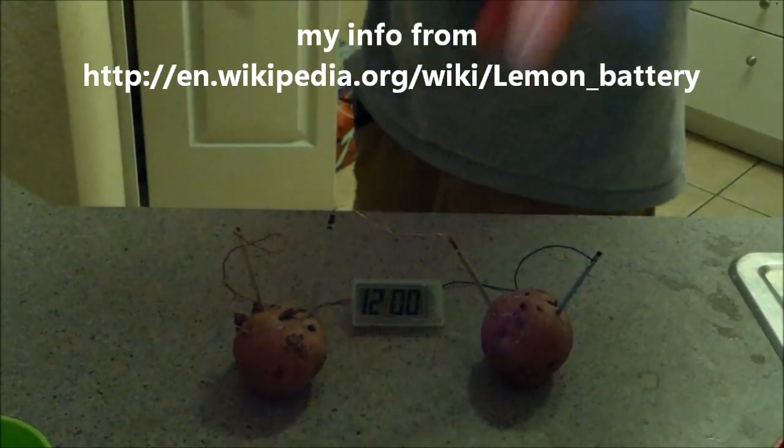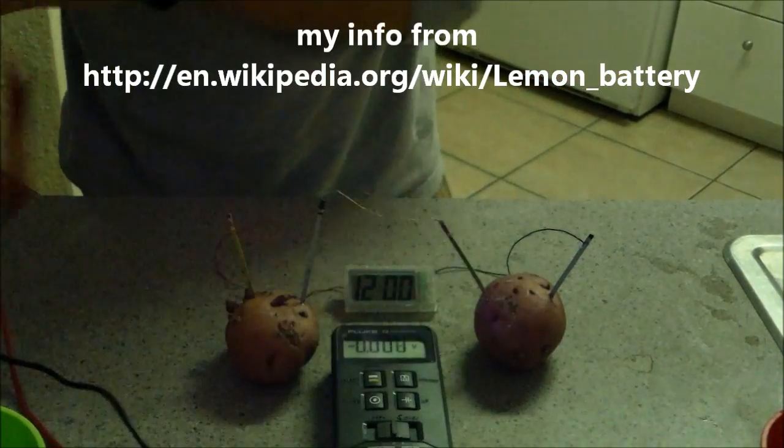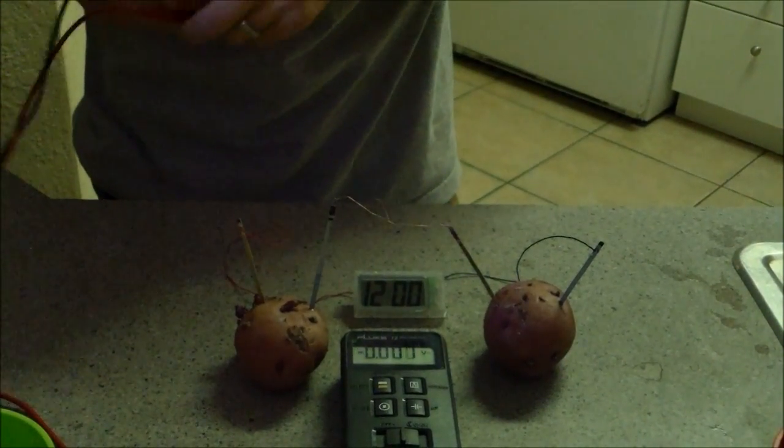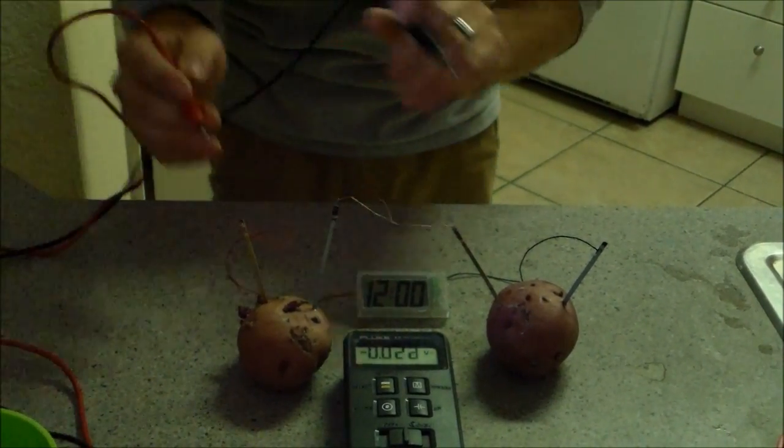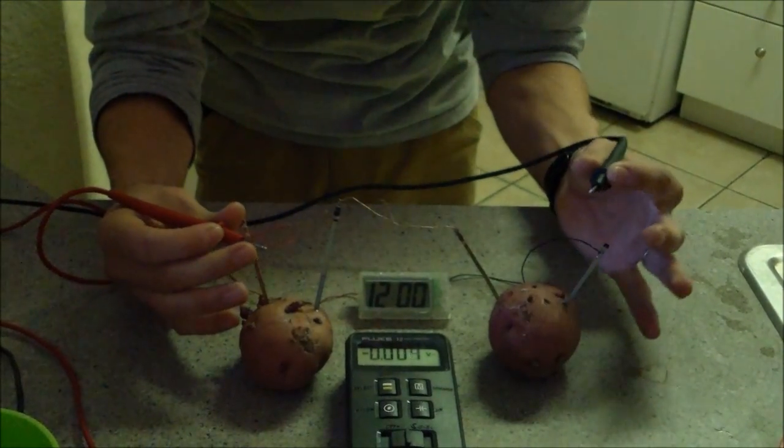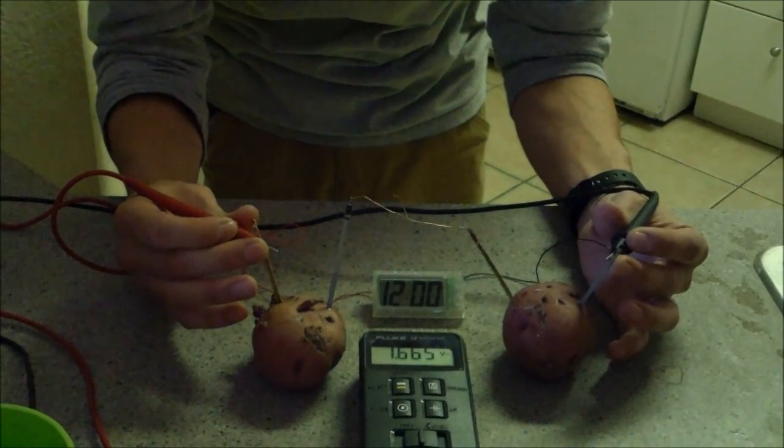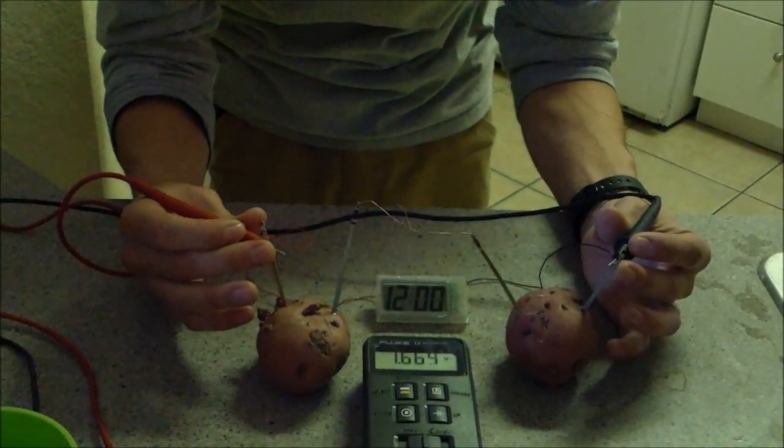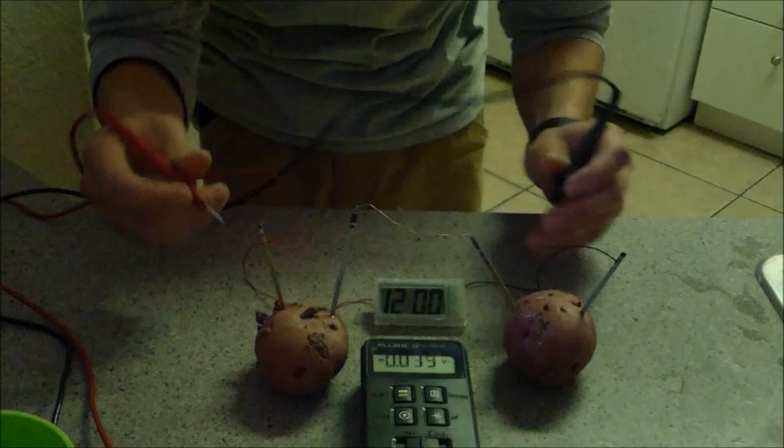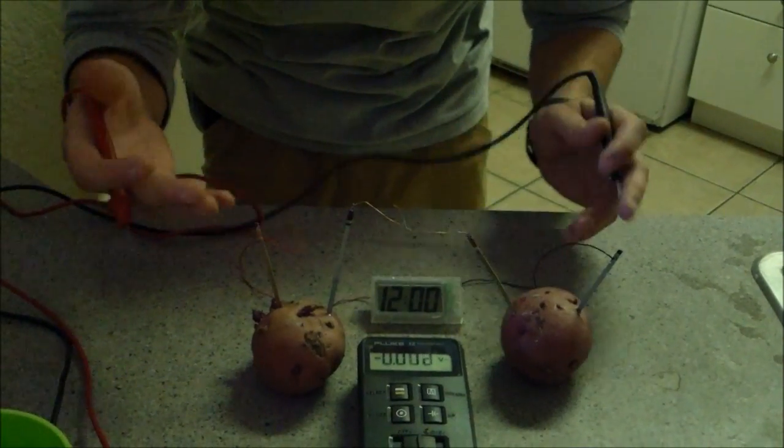So as you can see right here on my meter, I have it on DC volts, my voltmeter. I read the positive lead, which is the red, and the negative lead, which is the zinc, and it reads 1.65, well 1.66 volts, which is like a AA battery.